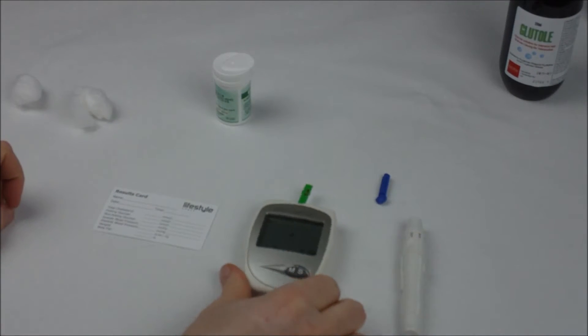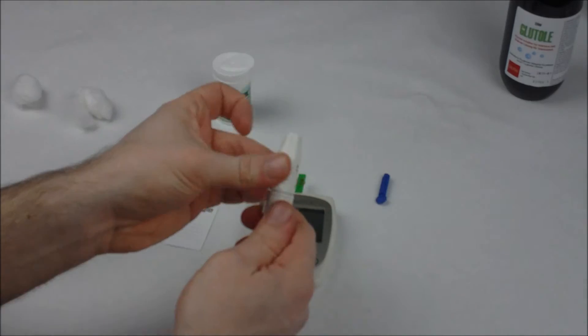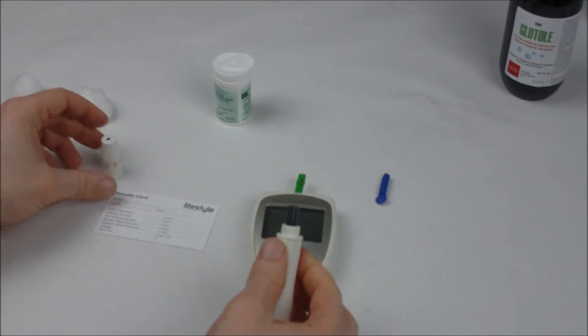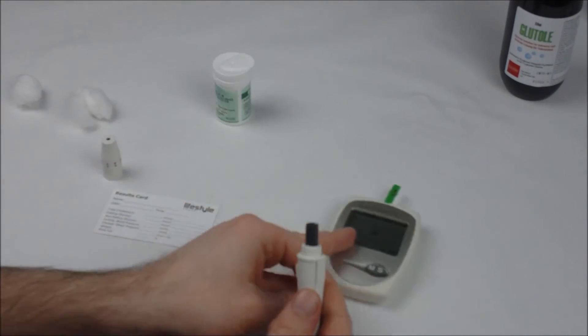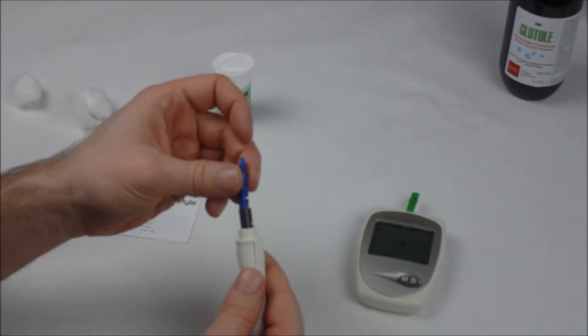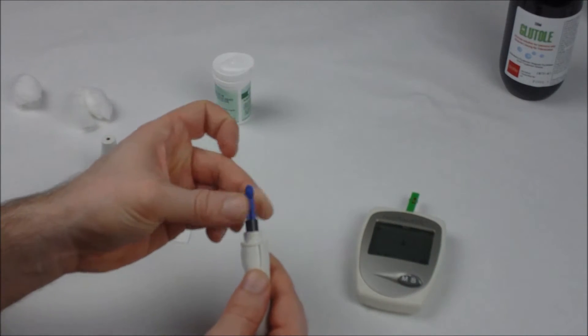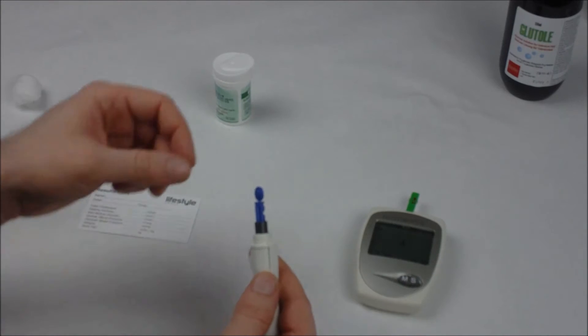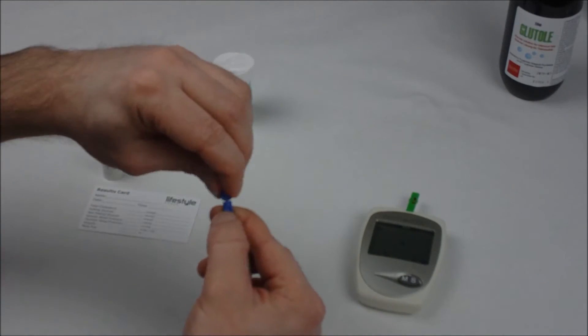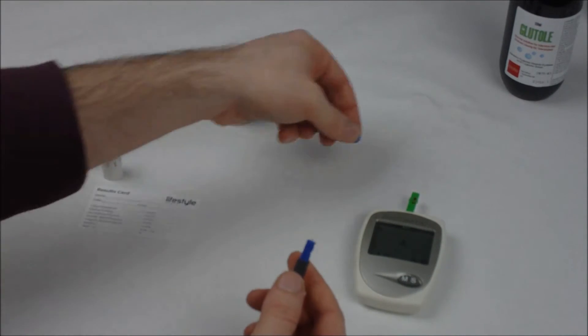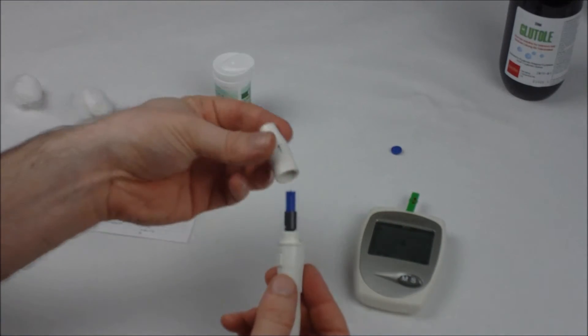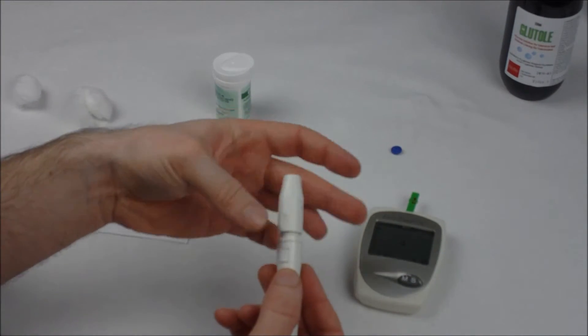Again you're going to do the same procedure. So unscrew your lancing device. Put your lancet in the lancing pen. Twist off the protective cap. Put that to one side. And re-screw on the pen lid.